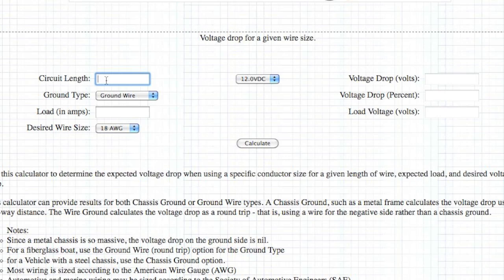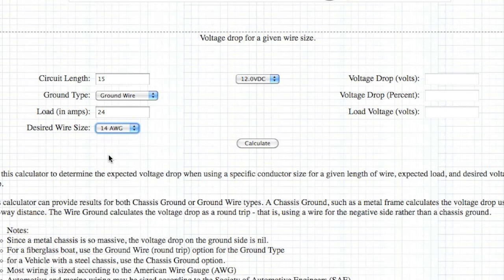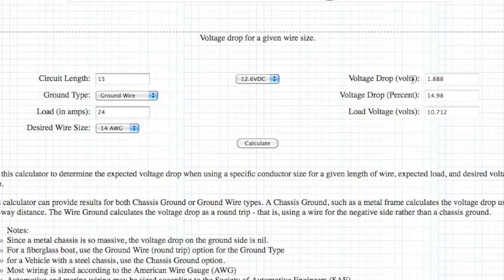So again, under circuit length, we're going to put in 15 foot. A ground type is still ground wire, and the load in amps this time though is 24 amps. Of course, this is the maximum load. So in this scenario, we're going to put in 14 AWG, and notice there is SAE and AWG here both listed. And again, we're going to make this 12.6 volts. Now, here it shows that we'll have an expected voltage loss of almost 2 volts, and less than 11 volts at the load, and almost a 15% voltage drop. So clearly, we have to increase the wire size so that we do not have an excessive voltage drop.